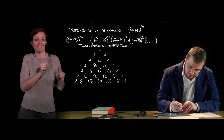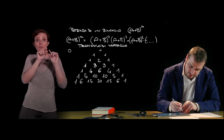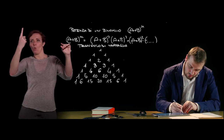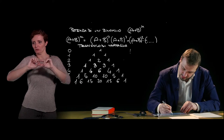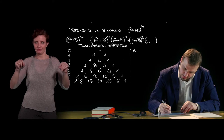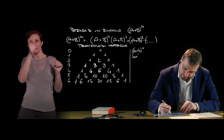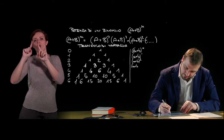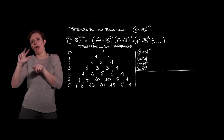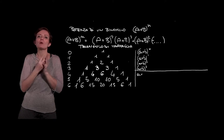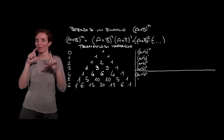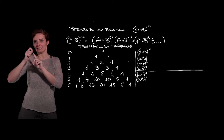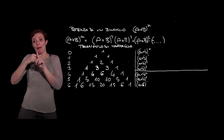The first row refers to the power with exponent 0, the second to exponent 1, then 2, 3, 4, 5, and so on. So this corresponds to (a+b)⁰, (a+b)¹, (a+b)², (a+b)³, and up to here we have already seen them as notable products. But using Tartaglia's triangle we can also expand (a+b)⁵, (a+b)⁶, and higher powers.